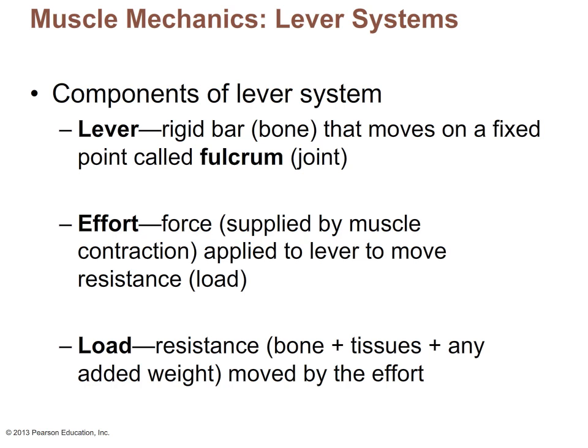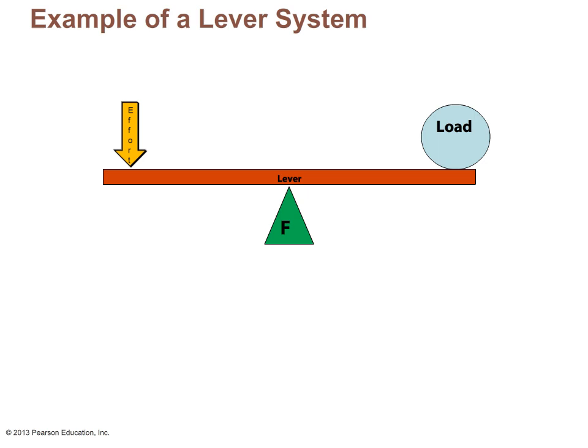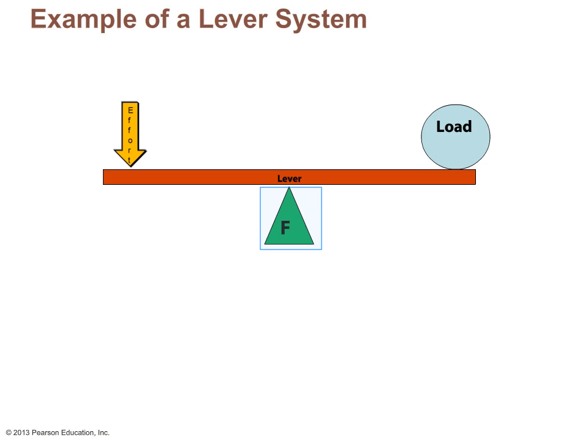Here's a simple diagram of a lever system. We have our lever in brown — just a fixed rod, usually a bone. The fulcrum is the pivot point, which in our case is a joint. The effort, shown with an orange arrow, is the force of muscular contraction, and it is trying to oppose the force of the load — whatever we're trying to lift or move.